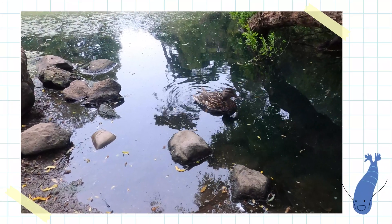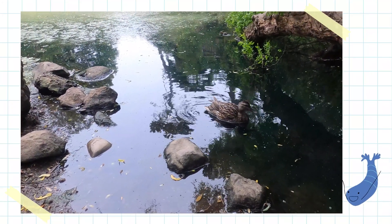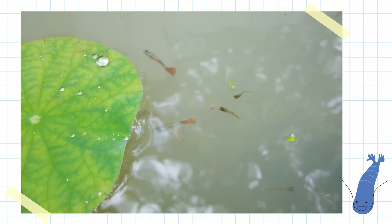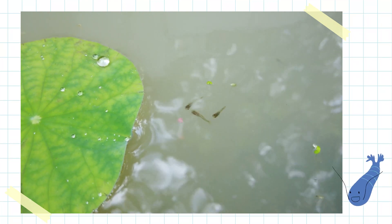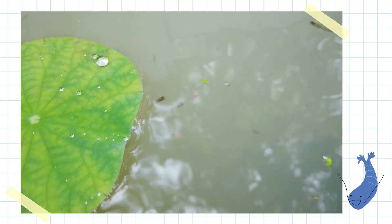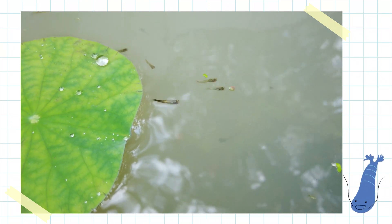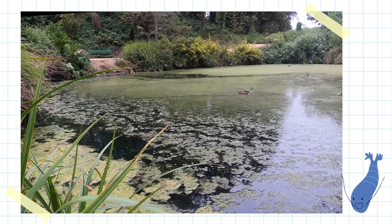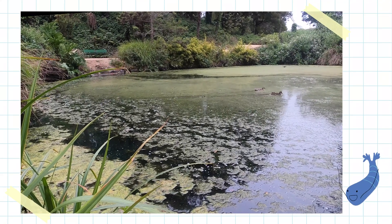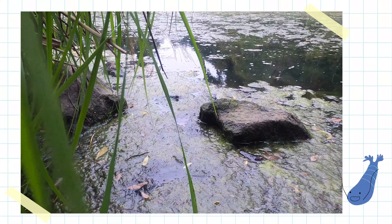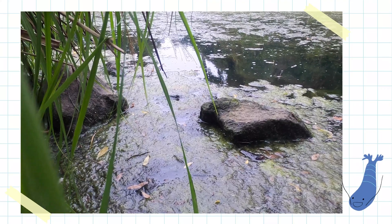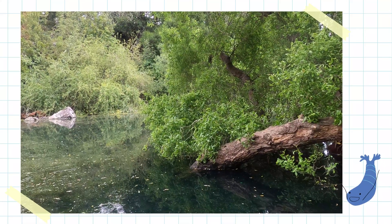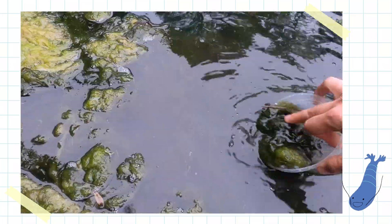Big ones like ducks and small ones like fish. There are also teeny tiny critters in the water. The green fluffy stuff is called algae. Algae is a plant. Let's bring some pond stuff home to see what we find.